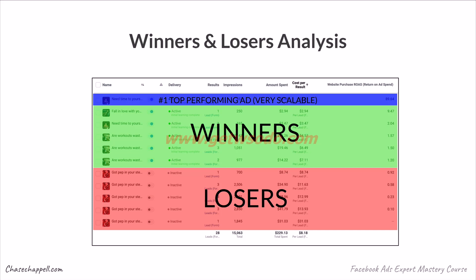Out of all these losers and winners, there is a clear top performing ad that is very scalable. After the learning phase, we can quickly identify it as the number one top performer: it has about three results — among the highest — plus the lowest cost at $2.83, and an 89x return on ad spend. The second best is only at 9x, which is already a good number, but 89x is exceptional. With numbers like that, it's a great ad for scaling. Once we cut the losers, spend moves to the winners and this top ad, and we can start increasing budget on it.